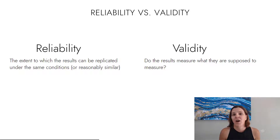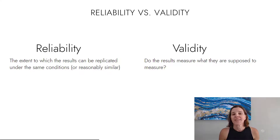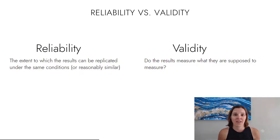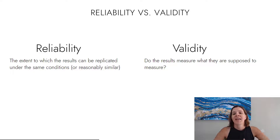Validity is about whether the assessments and data collection procedures you're using are actually measuring what they're supposed to measure. For example, if I want to measure 10th grade students' reading comprehension abilities, but I give them a series of writing prompts and ask them to create a written response — that's not measuring their reading comprehension abilities. So I cannot say anything about their reading comprehension based on that assessment. You want to make sure that whatever your data collection procedures are, including observational research, they're measuring what your study is supposed to measure and help us understand.